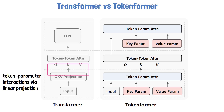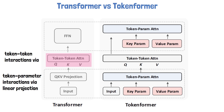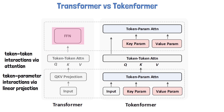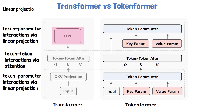Then we have the self-attention component where input tokens interact with each other, so token-token interactions are calculated via an attention block. Finally, to produce the output for the next layer, we have a feed-forward network, which again represents interactions between tokens and parameters calculated using linear projections. These token-parameter interactions are calculated via linear projection components, which hold a fixed size of parameters and require training from scratch when increasing model size.